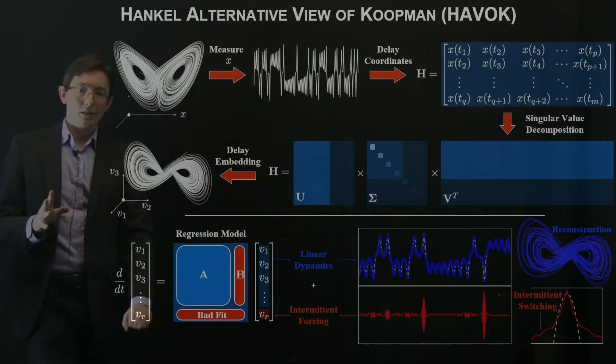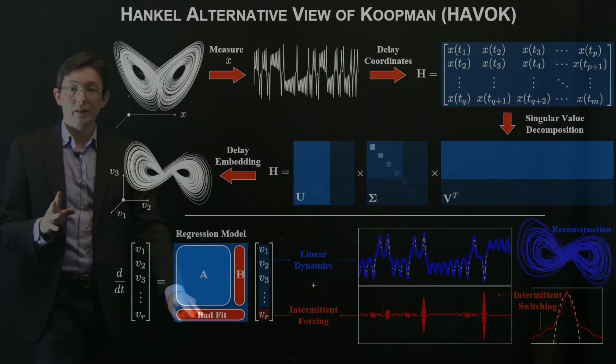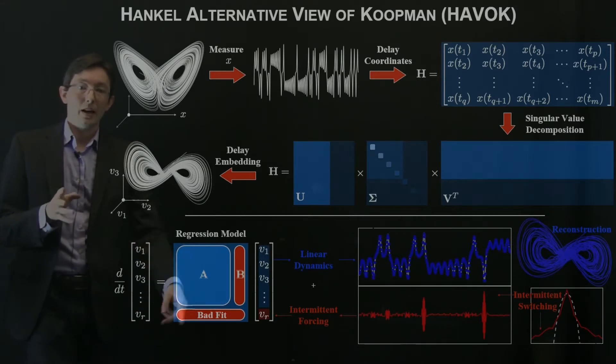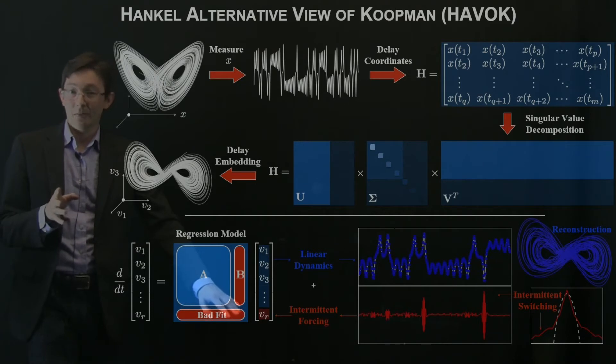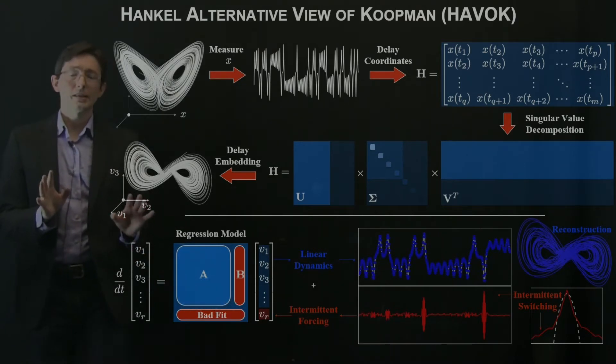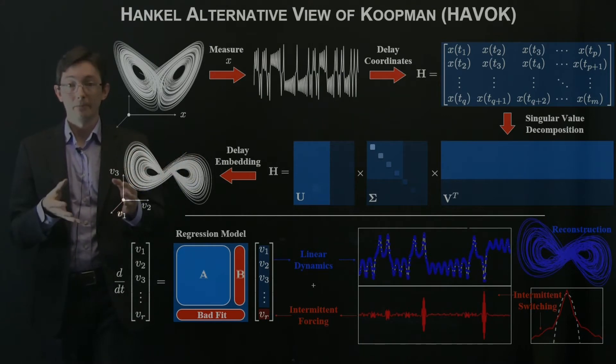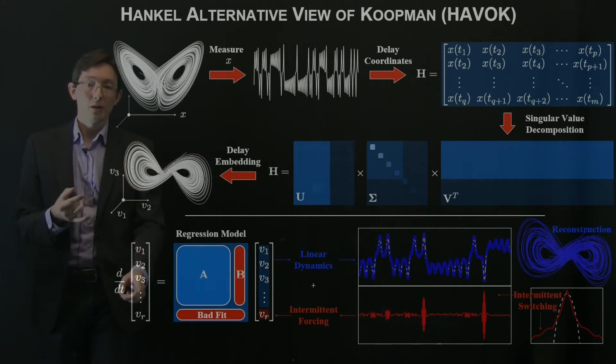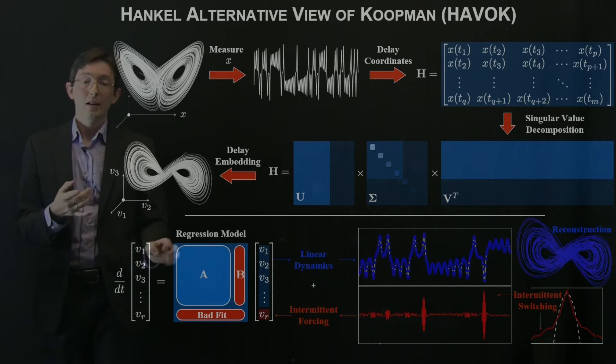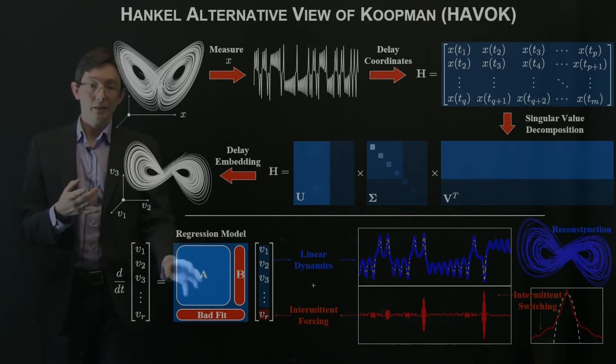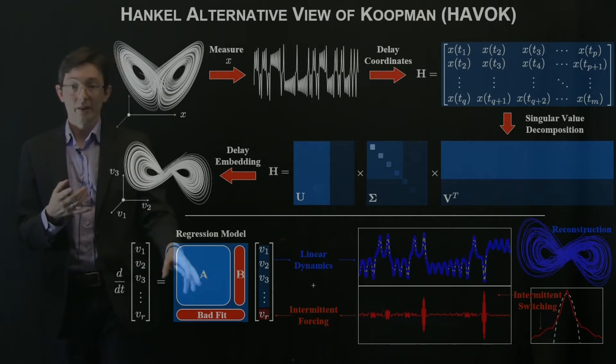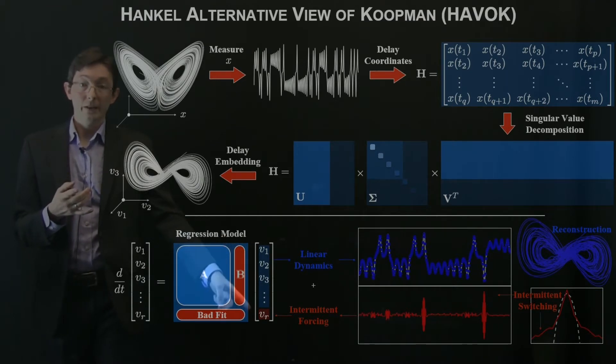Now the last row, the last time delay coordinate Vr is never very well approximated by this linear model. So this last row is kind of a bad fit. So instead we decide we're not going to try to model that. That's an external forcing. So we have our first R minus 1 delay coordinates is given by some linear model in the first R minus 1 delay coordinates, plus some forcing from the Vr, the arth or last time delay coordinate.